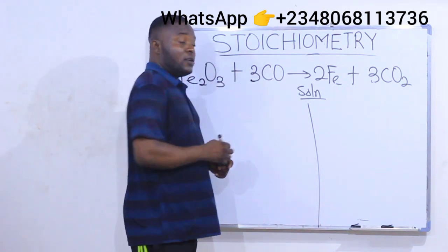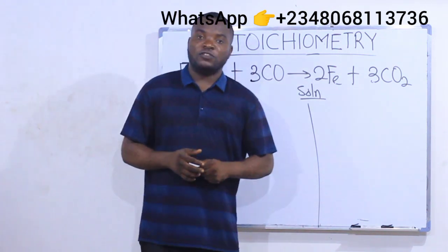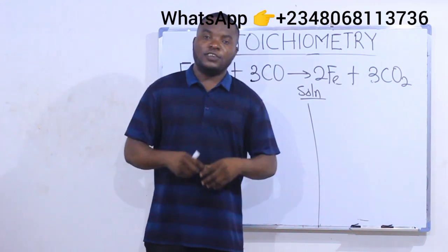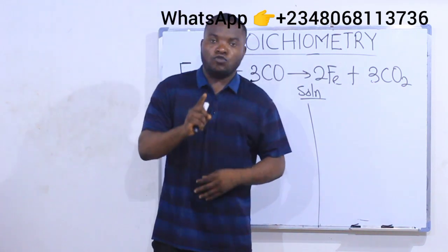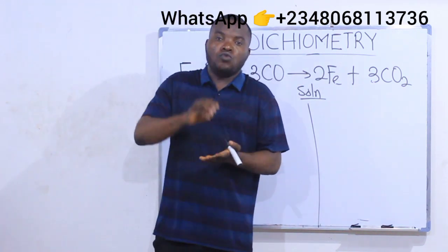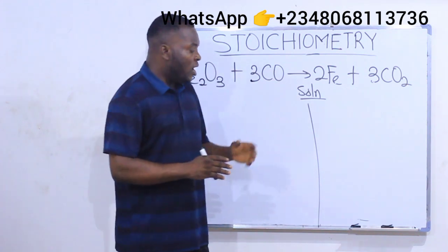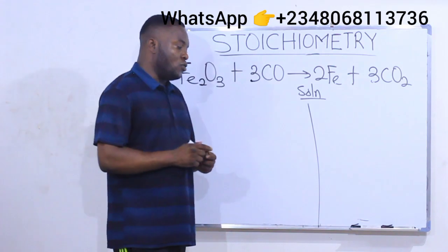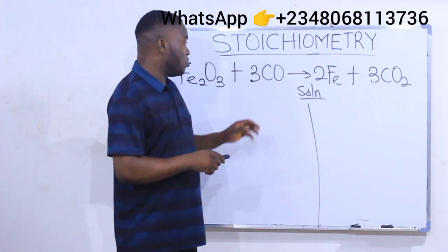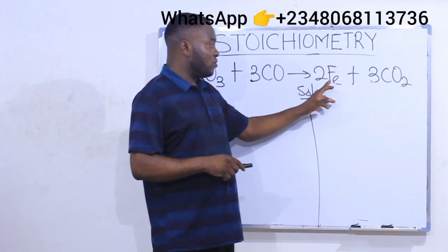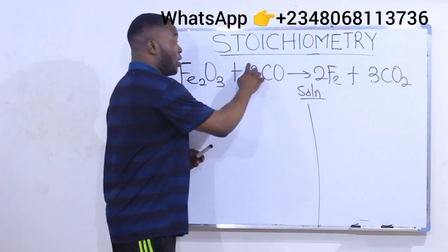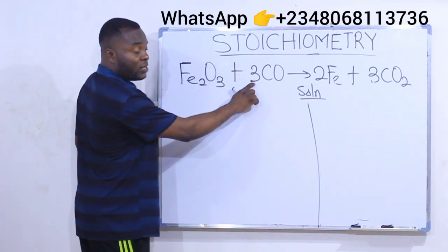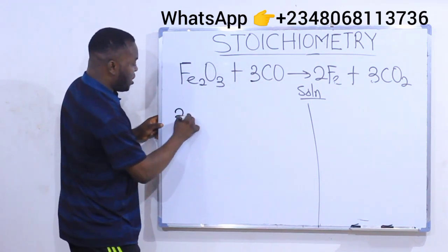Since the equation is already balanced, we skip step one and go to step two. Step two says: bring out two substances from the balanced equation. The first one to bring out is the one you are calculating for — the one you are looking for. From our equation, we are looking for CO, so I'll bring out three CO.